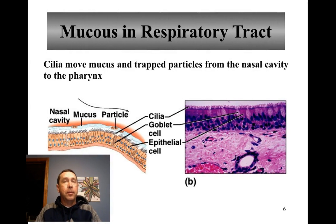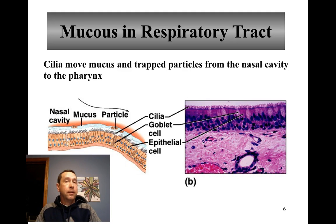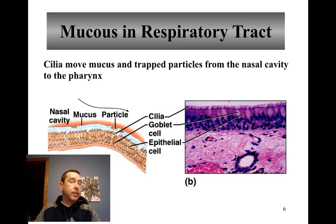There's mucus in the upper respiratory tract. It's also a ciliated epithelium, so when particles get trapped in the mucus, the cilia create a current and move the trapped particles from the nasal cavity to the pharynx, or from the larynx up into the esophagus. Goblet cells secrete the mucus, and basically this is a way to take things that are trapped and get them out of the body.